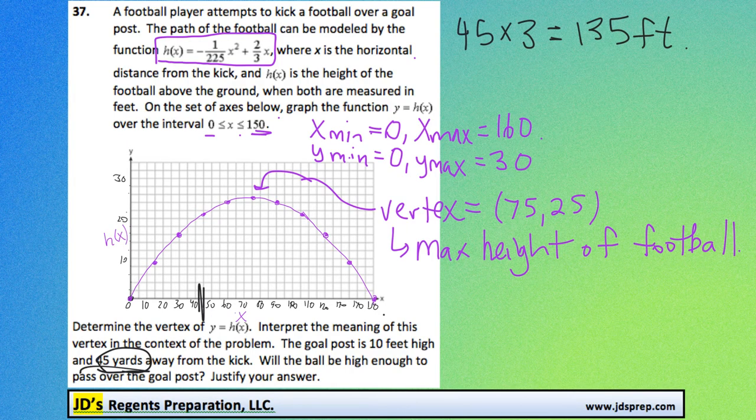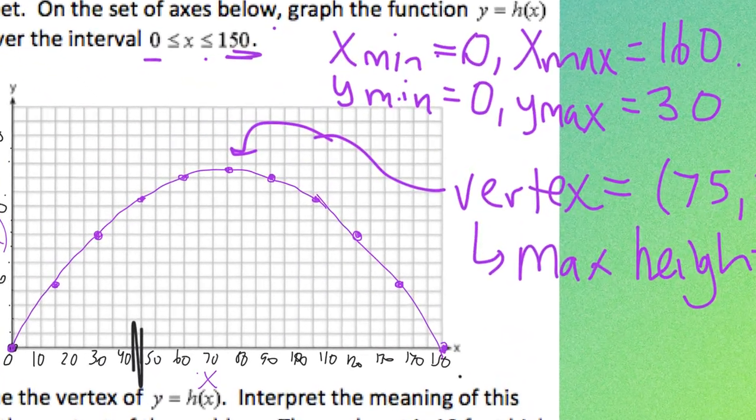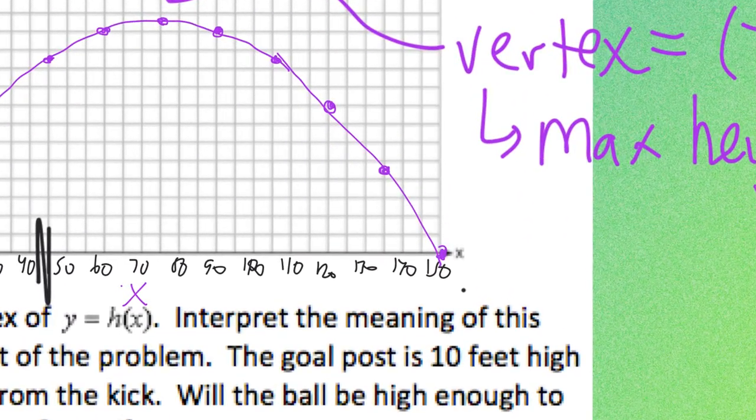Now, let's zoom in here and take a look at 135 feet. The goalpost is 10 feet high. So 135 feet is here. And then 2, 4, 6, 8, 10. So that means the goalpost is right here.